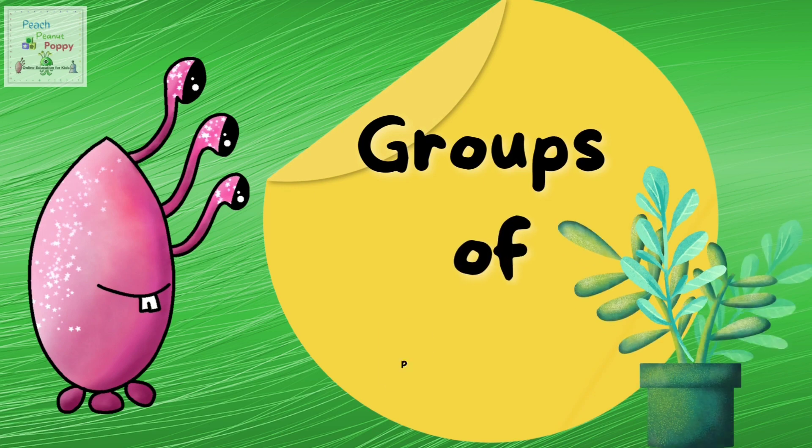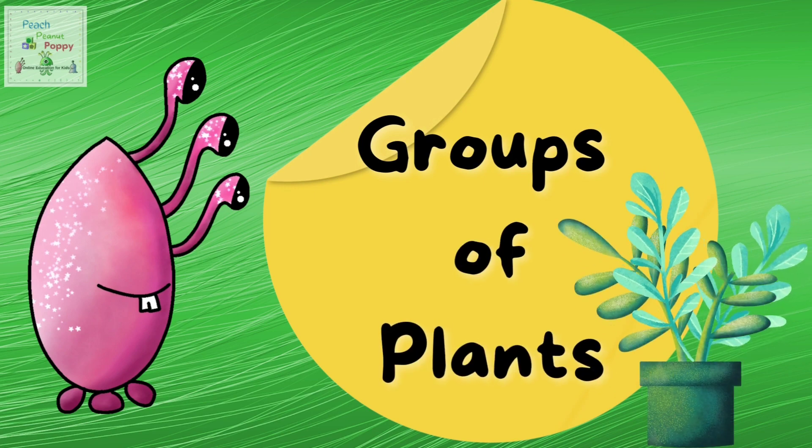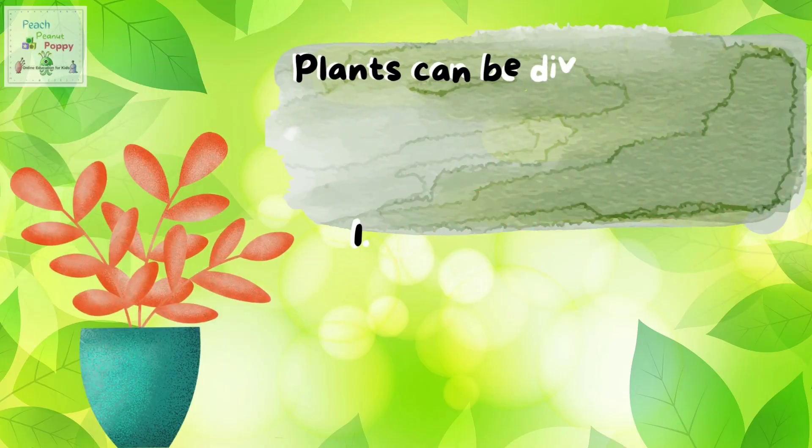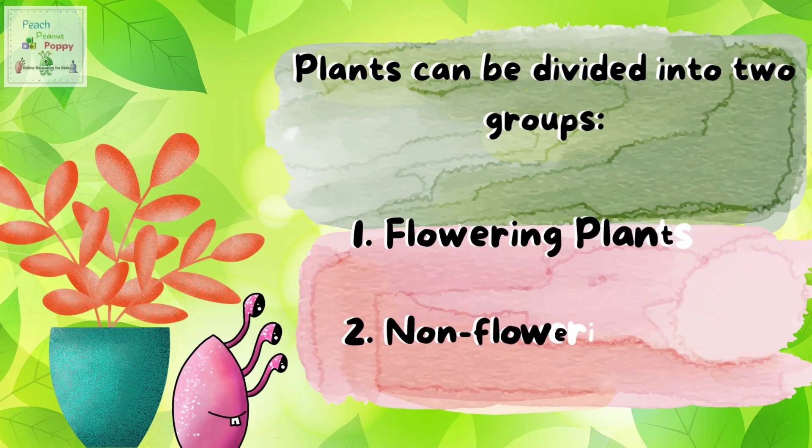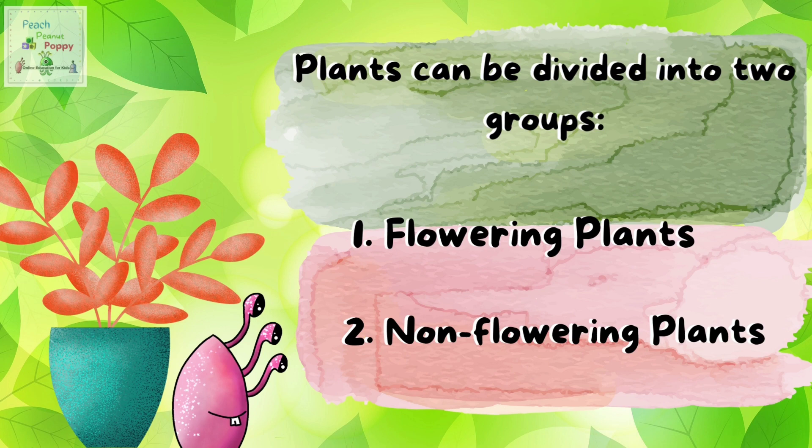Groups of Plants. Plants can actually be divided into two major groups — those would be flowering plants and non-flowering plants.